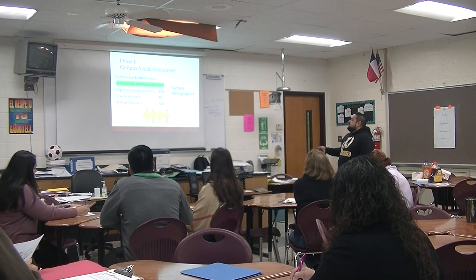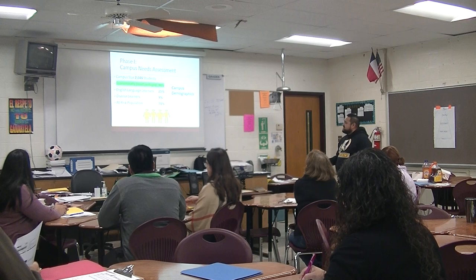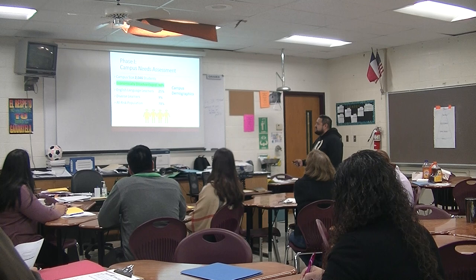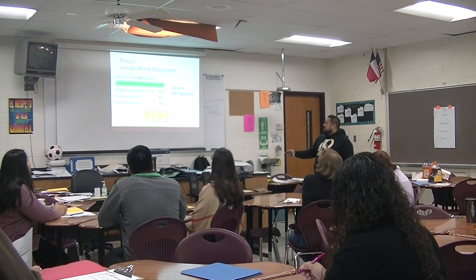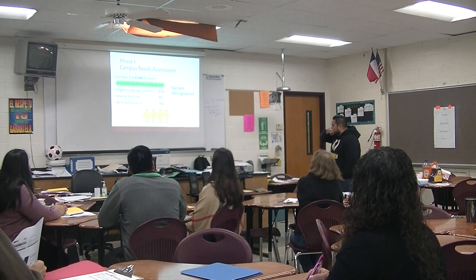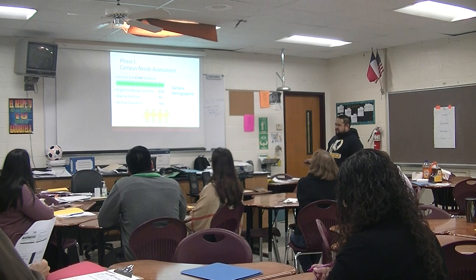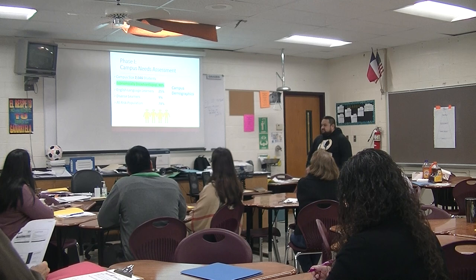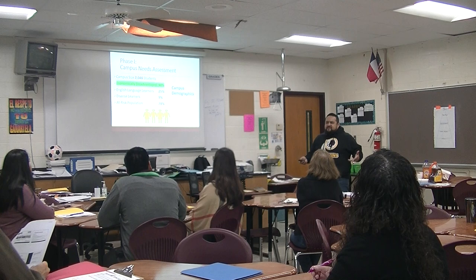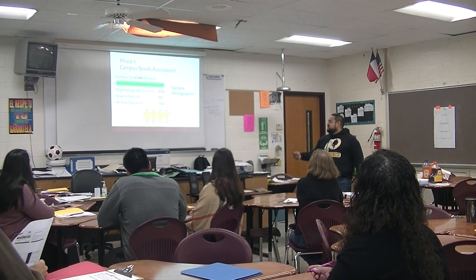Here are our campus demographics from last year. We had 2,046 students on campus. Out of those students, 90 percent of our population is economically disadvantaged — that number is about the same this year. Our English language learners make up 25 percent of our campus, which is a big portion. Our diverse learners are 9 percent and our at-risk population is 70 percent. Research suggests we have lower scores partly due to having a high number of economically disadvantaged students.